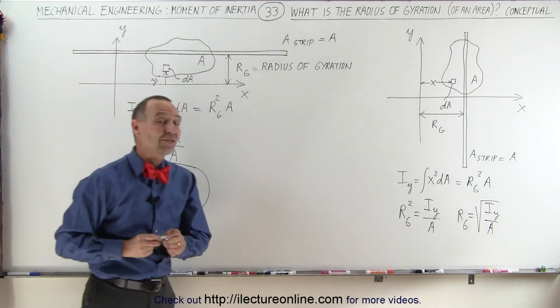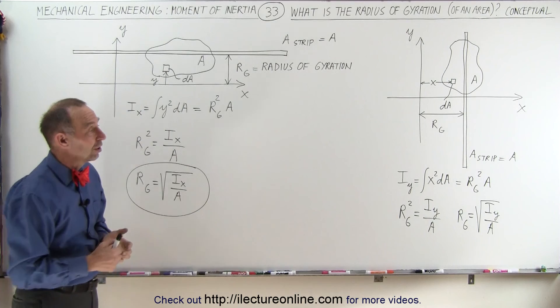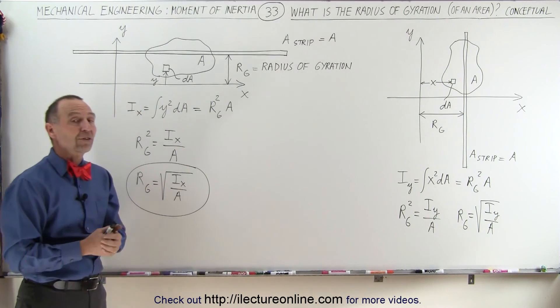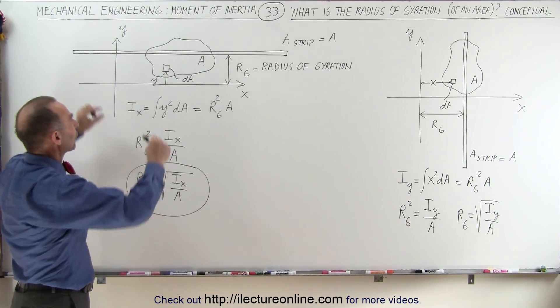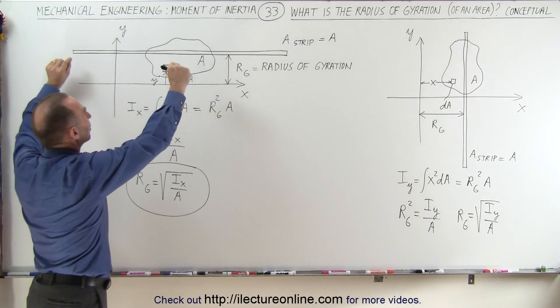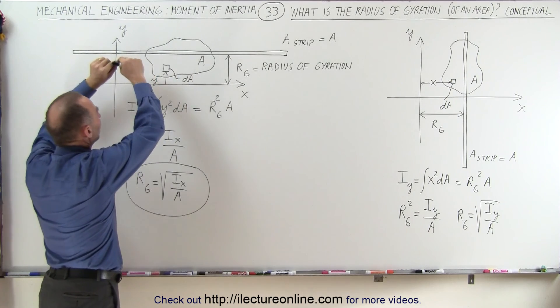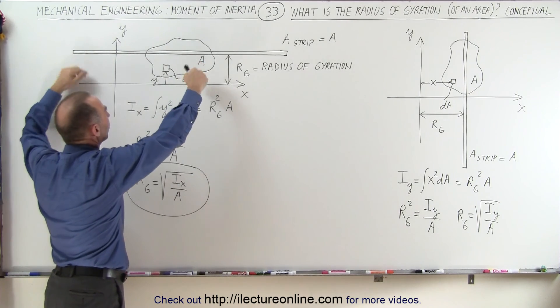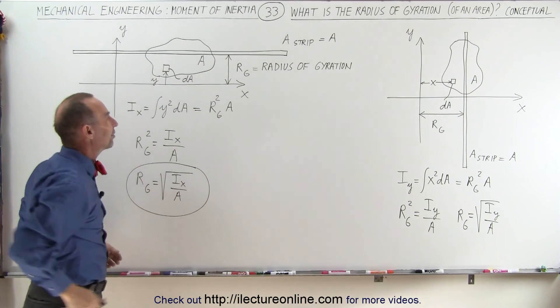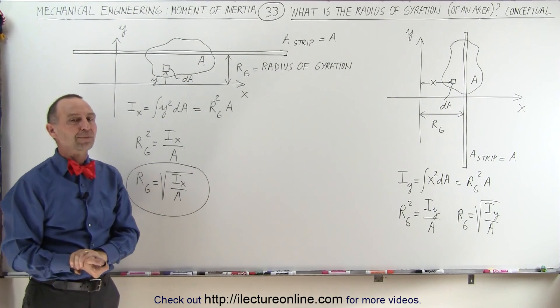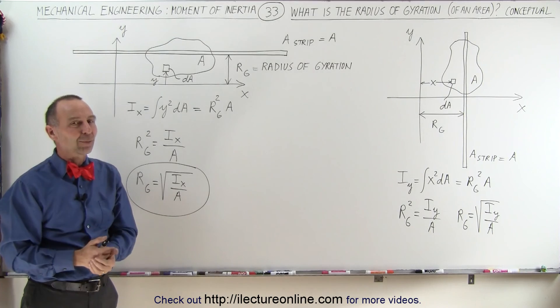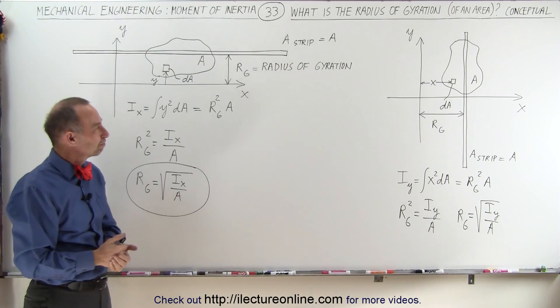So that's the definition of the radius of gyration: where would we have to put an equivalent area in the form of a thin strip so we get the very same moment of inertia? And that's what it is.